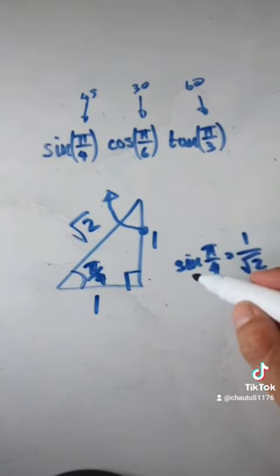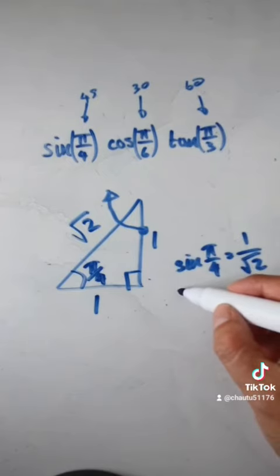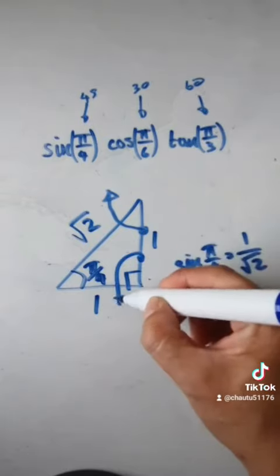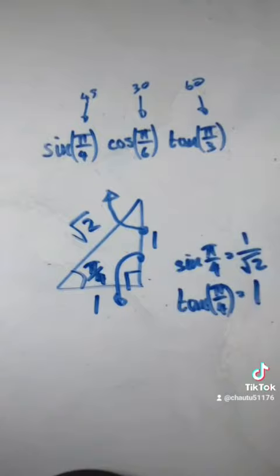If you want to know tan of 45 degrees, well, tan is this thing here, which will be 1 over 1, which is 1.